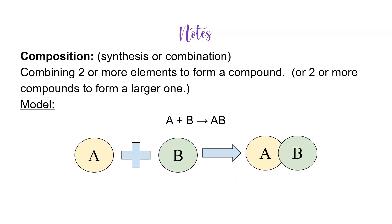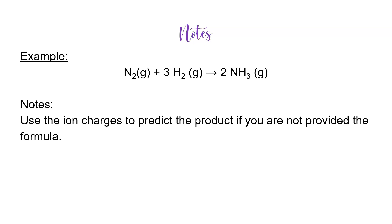Composition is also called synthesis or combination reactions. This is where we combine two or more elements as reactants to form one compound as a product. We have a model where A and B combine to form compound AB. A real-world example is the formation of ammonia from nitrogen and hydrogen. Note that you may need to use ion charges to predict products if you're not given a formula directly — we covered that in unit four.